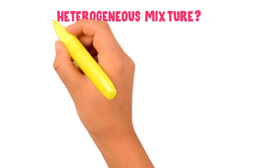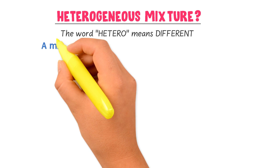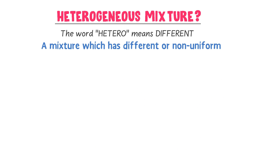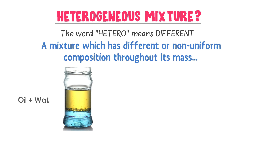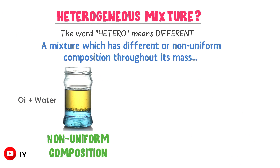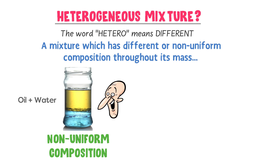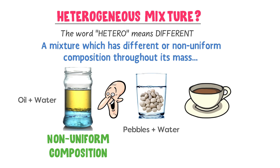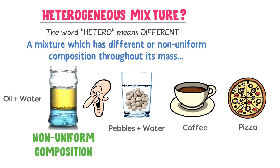What are heterogeneous mixtures? The word 'hetero' means different. A mixture which has different or non-uniform composition is called a heterogeneous mixture. For example, when you add some oil to the water, the composition of this mixture is non-uniform because you can easily spot the layer of oil and water with the naked eye. So it is a heterogeneous mixture. Some other examples of heterogeneous mixtures are small pebbles in water, coffee, and pizza. These all have different or non-uniform compositions.